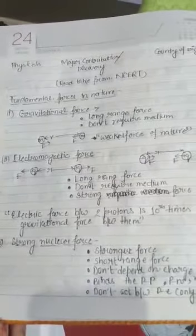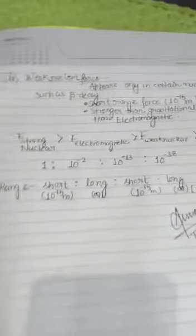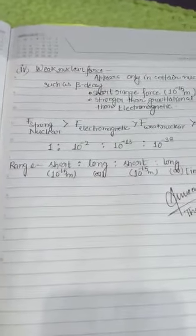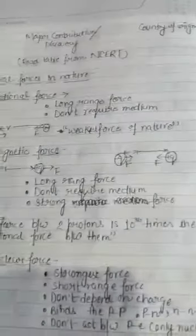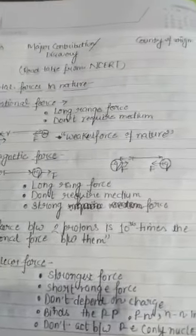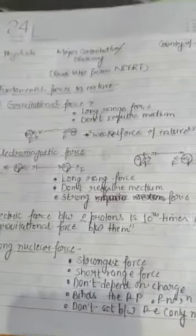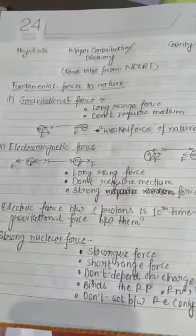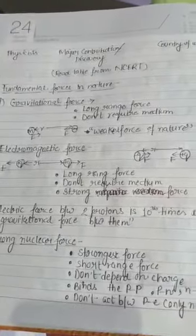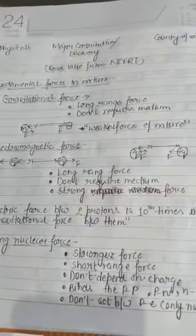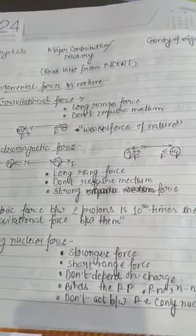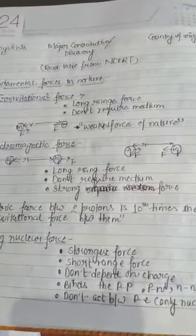That is gravitational force, electromagnetic force, strong nuclear force and weak nuclear force. Gravitational force is the long range force and doesn't require any medium. Electromagnetic force is a long range force, it also doesn't require any medium, it's a strong force while the gravitational force is the weakest force of nature.